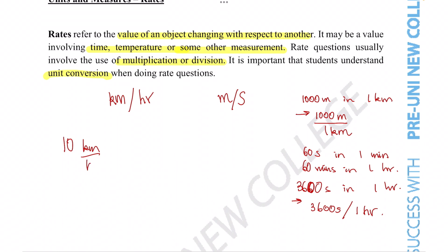If I want to convert 10 kilometers per hour into meters per second, we can multiply by the fact that there are 1000 meters per one kilometer, and that there are 3600 seconds per hour, and we can then cancel out the common factors.